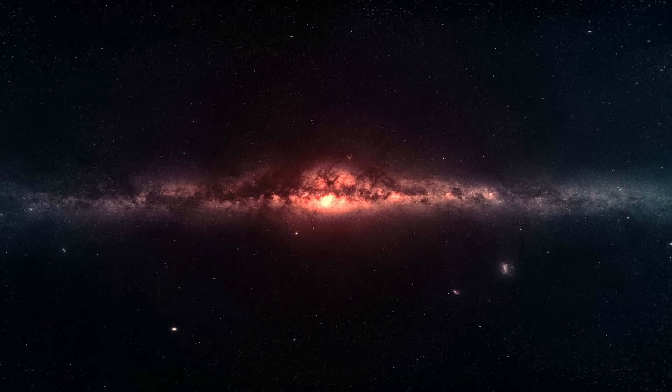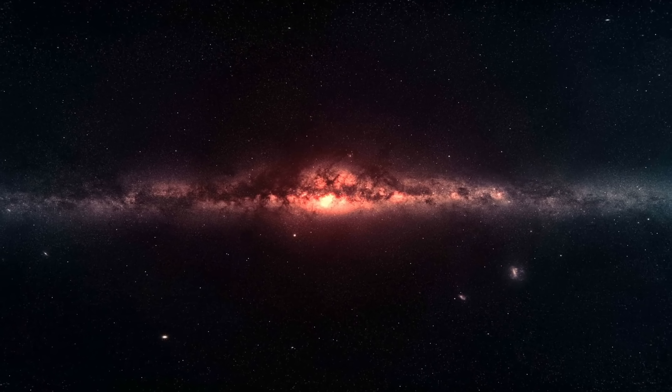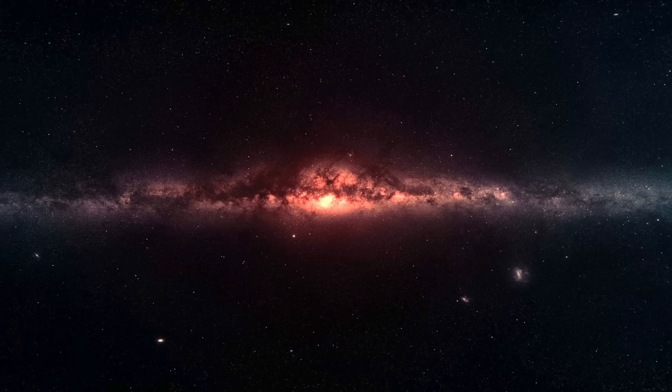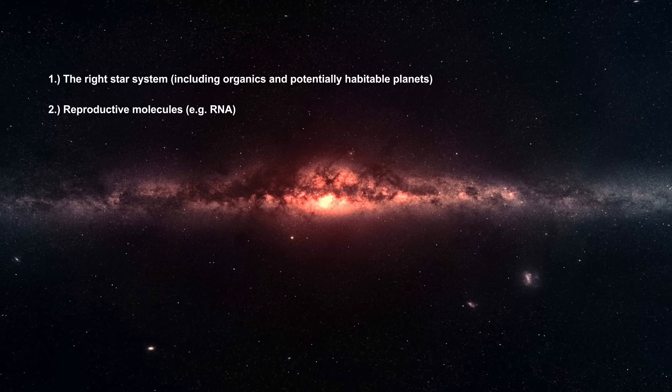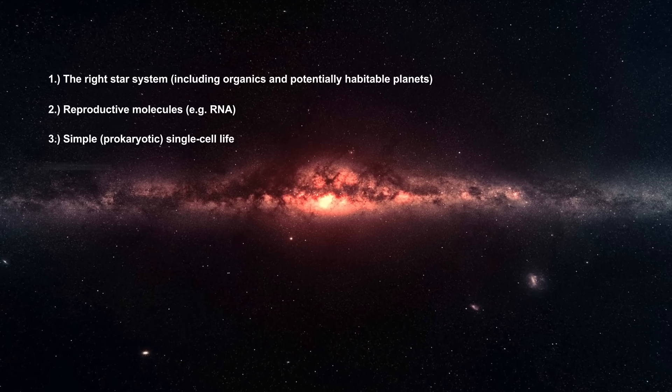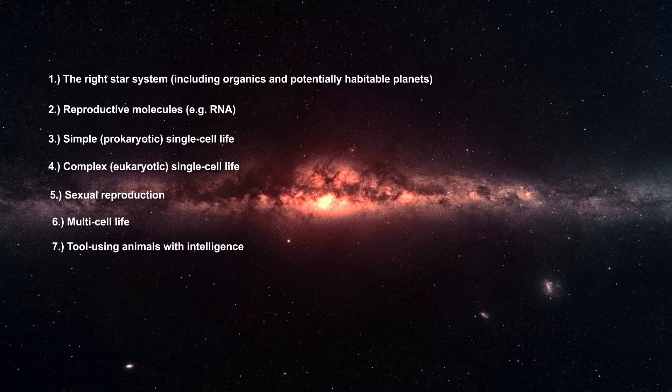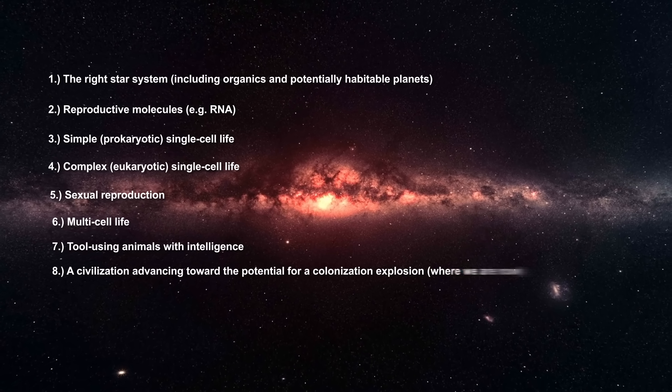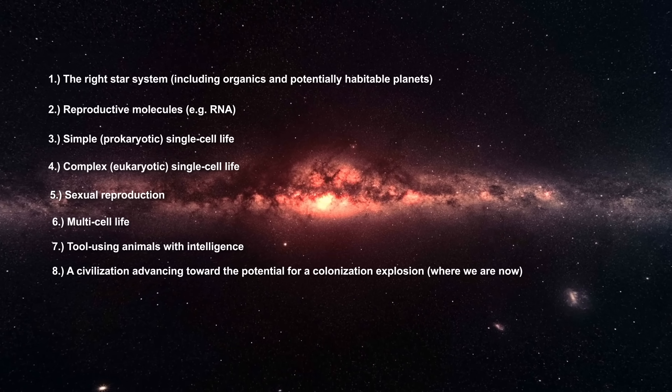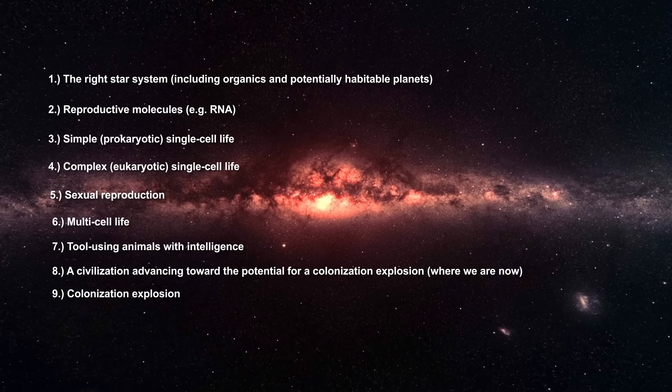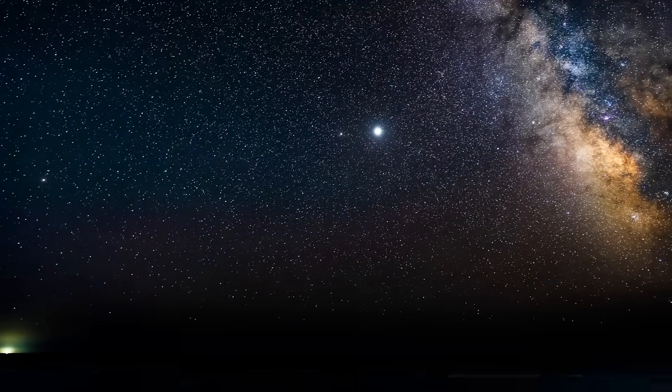Economist Robin Hanson described a list of nine steps in an evolutionary path that results in the colonization of the observable universe. The right star system, reproductive molecules, simple single cell life, complex single cell life, sexual reproduction, multi-cell life, tool using animals with intelligence, a civilization advancing towards the potential for a colonization explosion and a colonization explosion. According to the Great Filter hypothesis, at least one of these steps must be improbable. If it is not an early step, then the implication is that the improbable step lies in our future and our prospects of reaching step nine of interstellar colonization are still bleak.